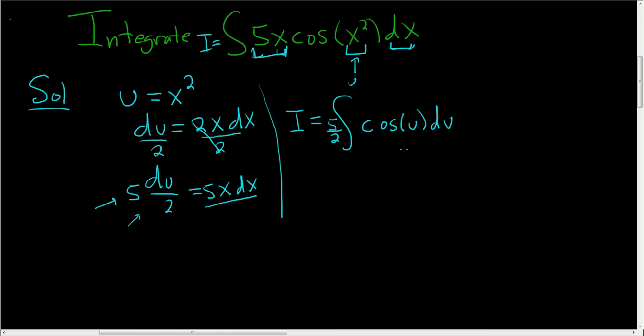When you integrate cosine, you just get sine. So you get 5 halves sine u plus a constant. And that does check, right? The derivative of sine is cosine.